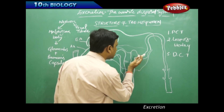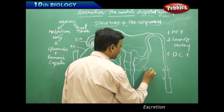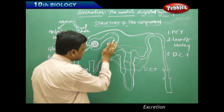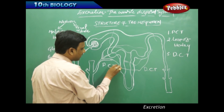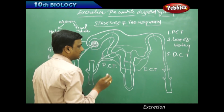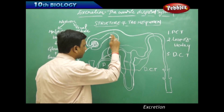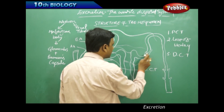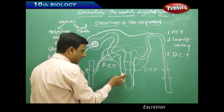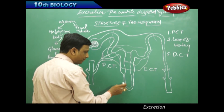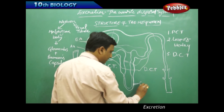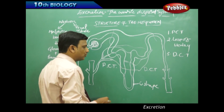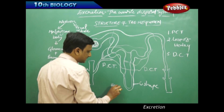The first part of the tube is called the proximal convoluted tubule (PCT), and the far end is called the distal convoluted tubule (DCT). The PCT and DCT are connected by a thin U-shaped tube called the loop of Henle or Henle's loop.